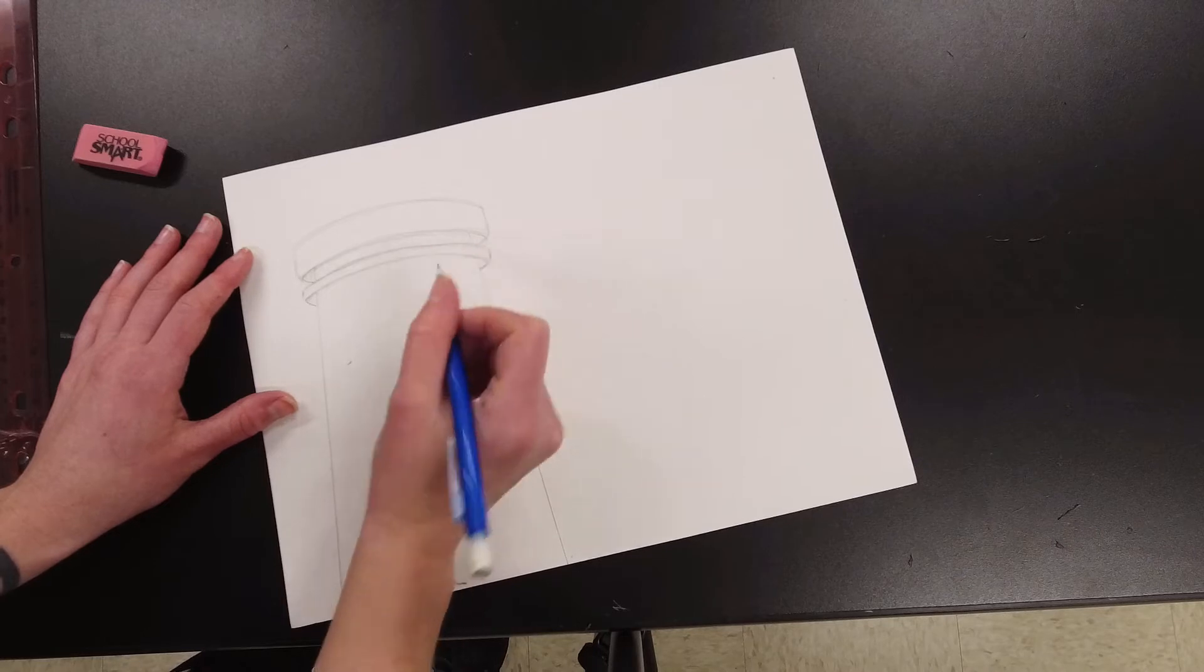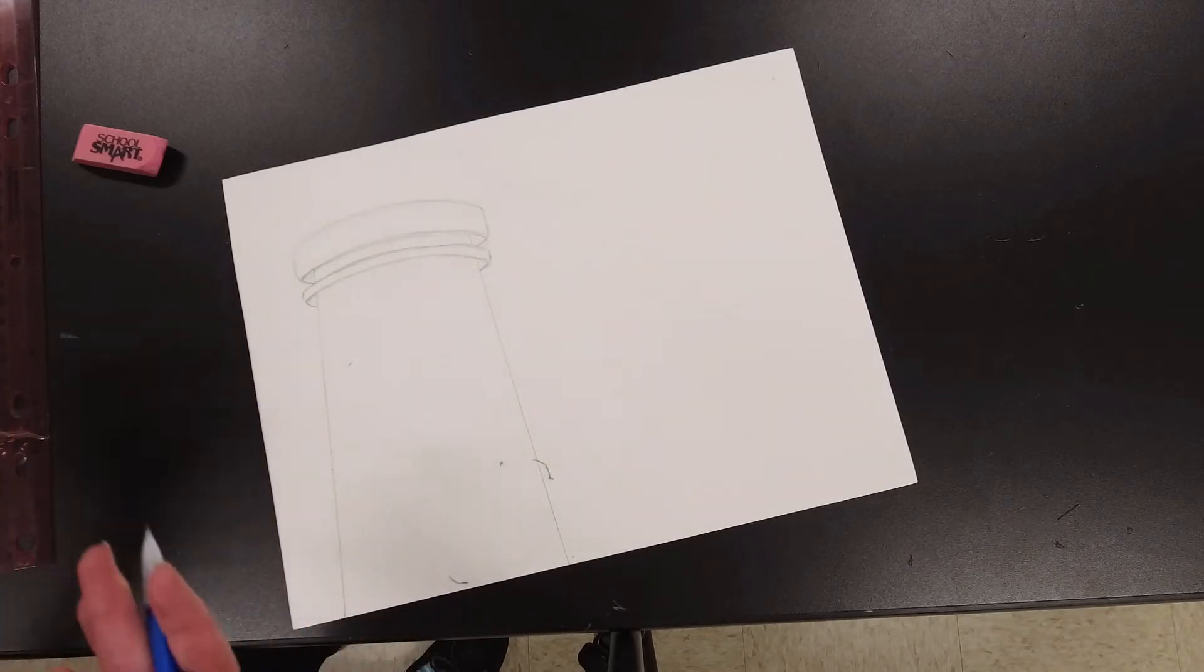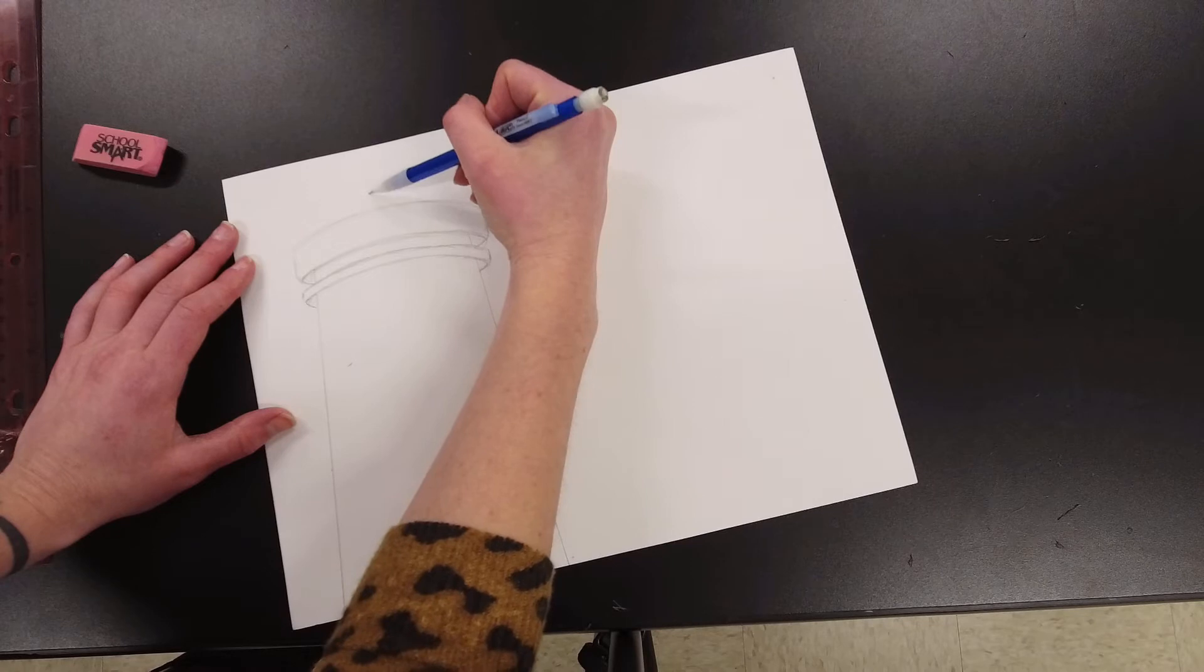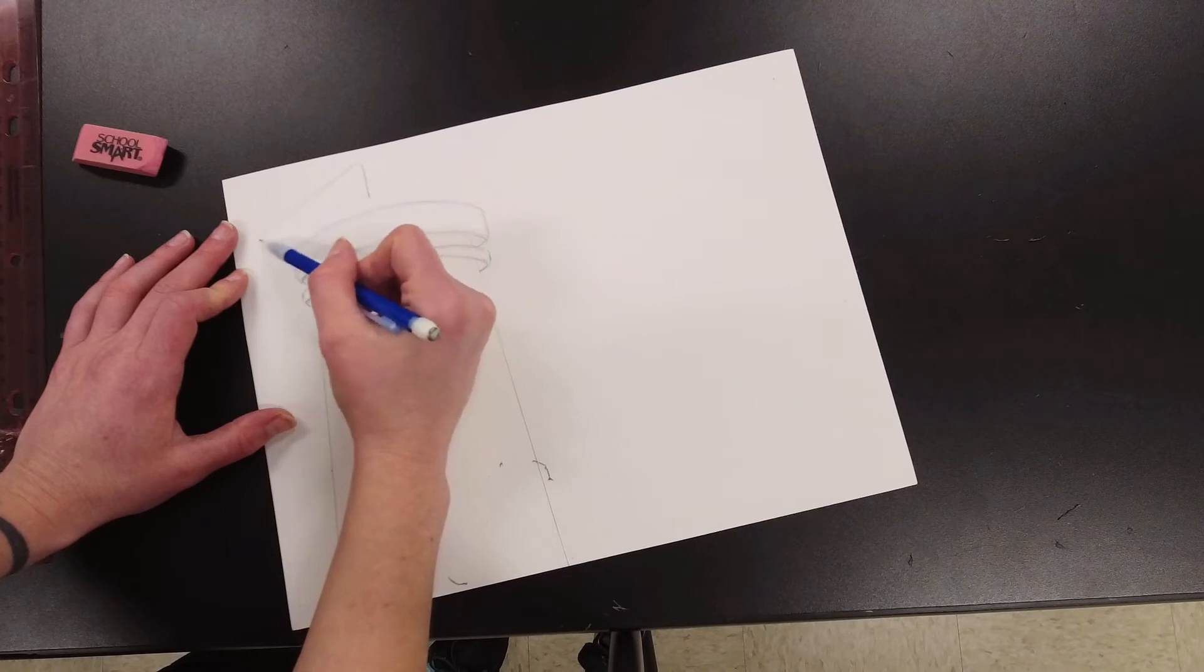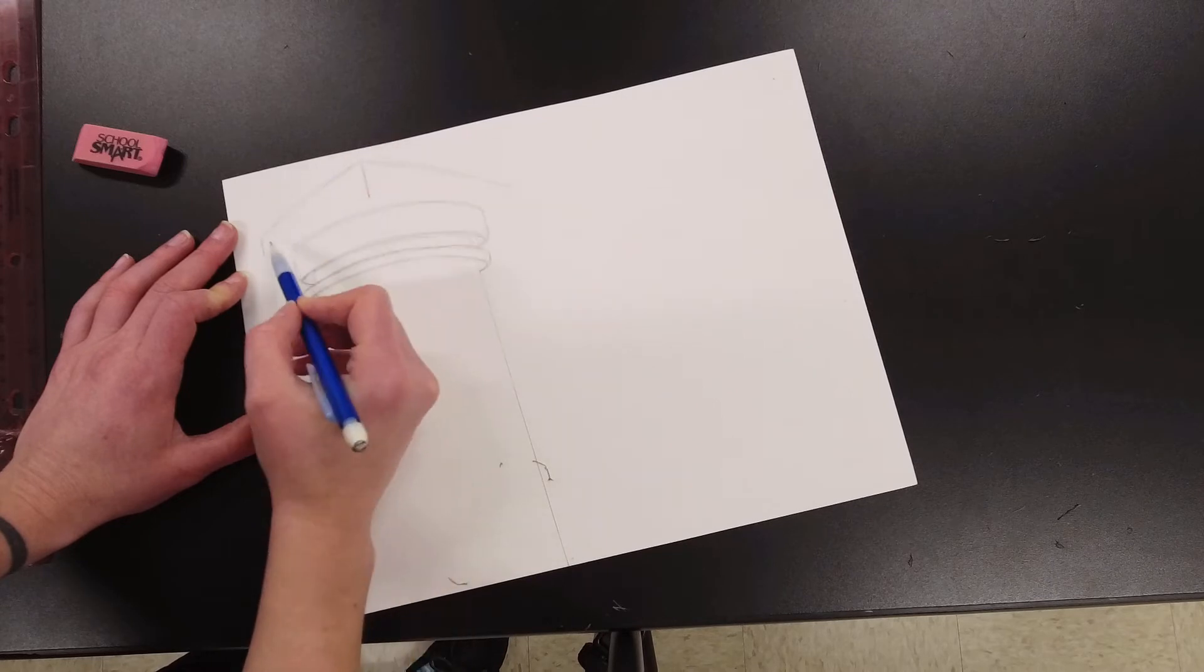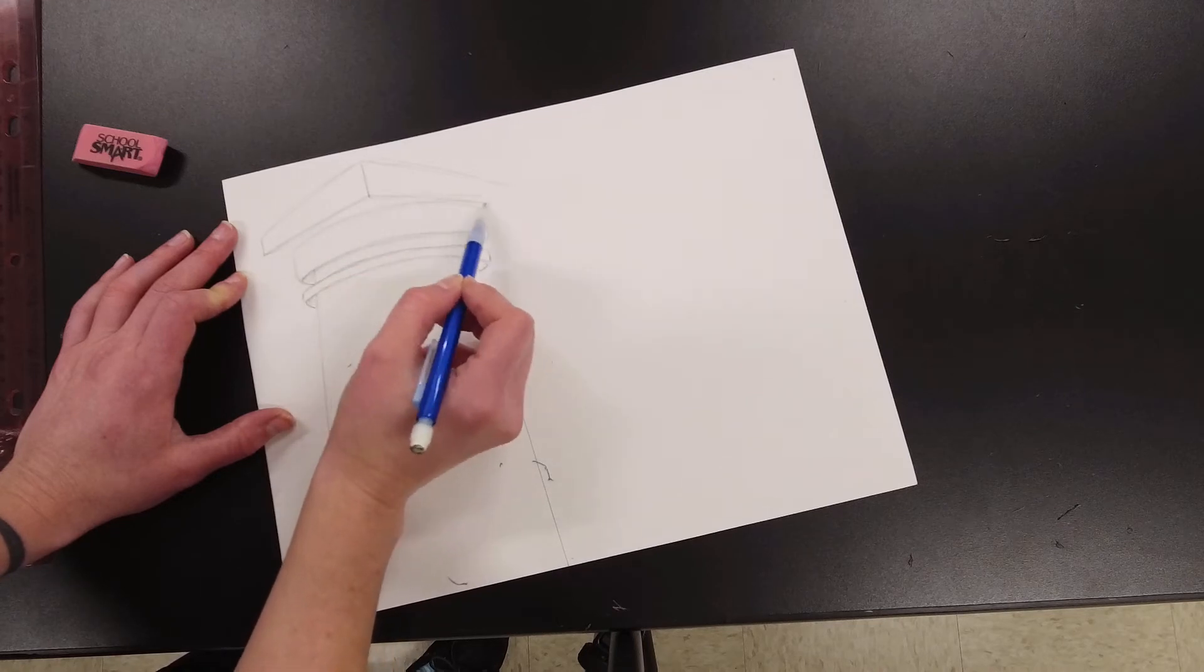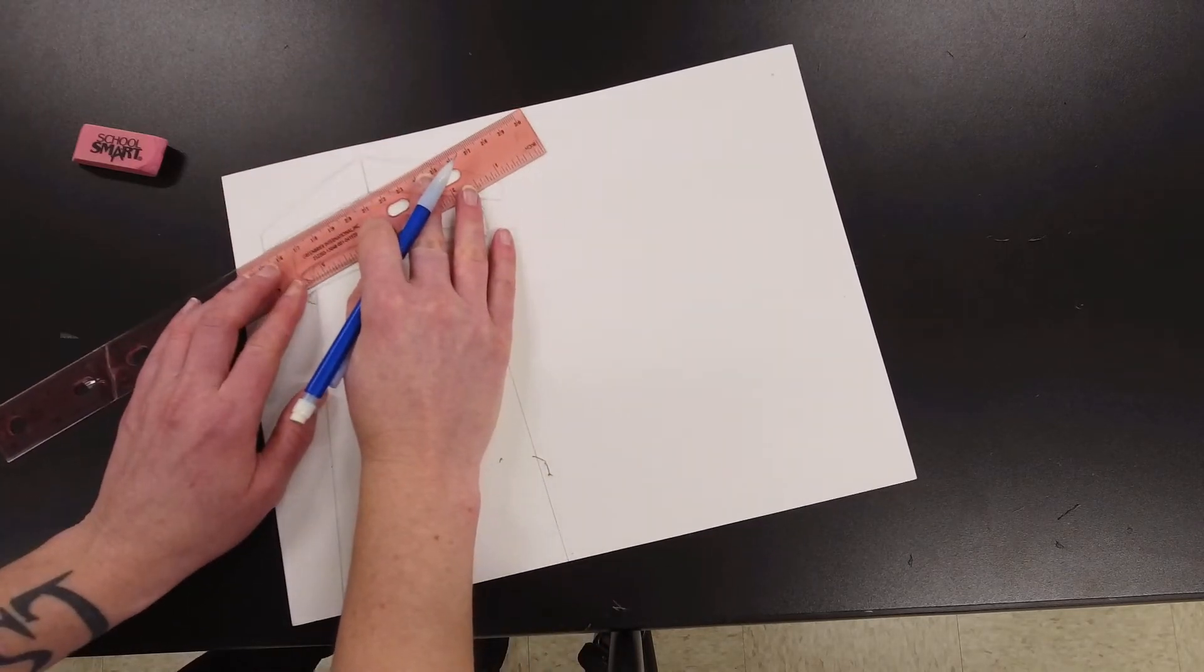So what I'm doing right now is just bringing those sort of curved lines down on the bottom here, so that it looks like it actually wraps around. Now some people like to then still add something to the top. You can definitely add sort of a square with a vertical line and then a diagonal line that kind of goes down.